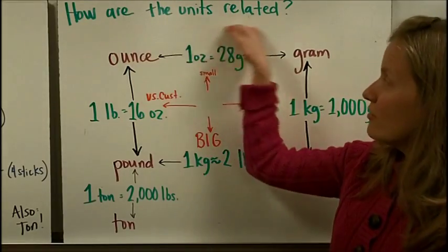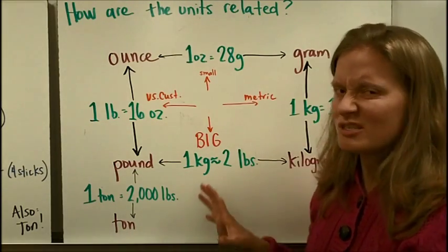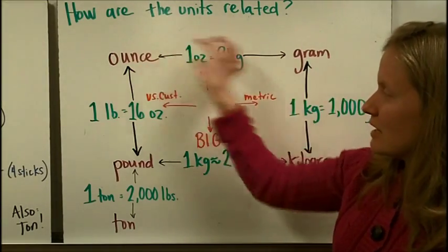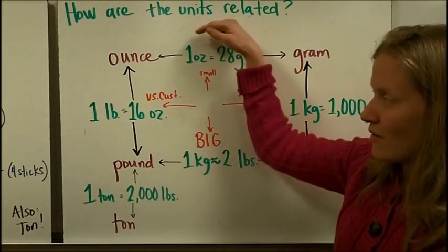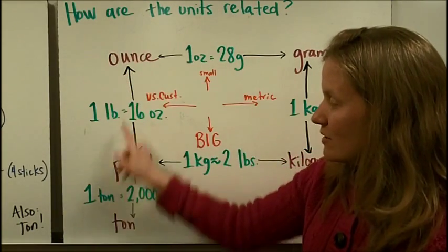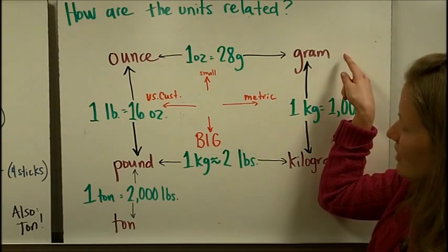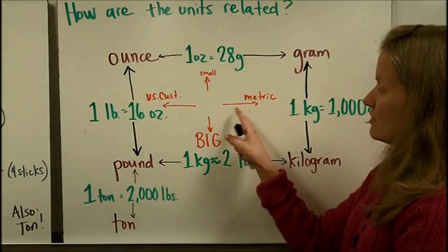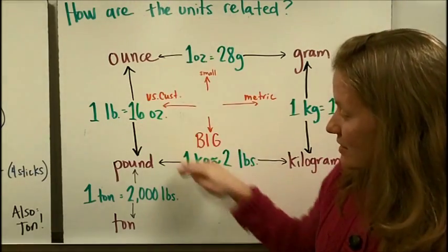Next we need to know how the units are related. This chart looks complicated, but if you break it into pieces, it's not that bad. At the top I have the small units: ounces and grams. At the bottom are the big units: pounds, kilograms, and tons. Go up to find the small things, go down to find the big things. On the left are the U.S. customary units in purple — ounce, pounds, and tons. On the right are the metric units: grams and kilograms. So to find the small metric unit, go to the metric side and go up, and that points you to grams.